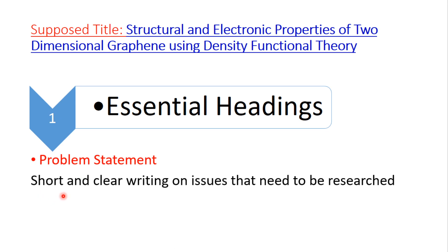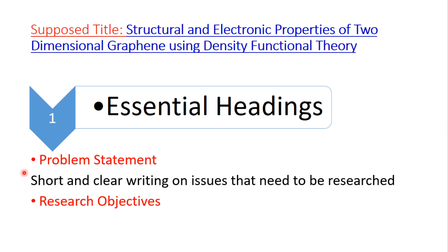The second essential heading is problem statement, which is a short and clear description of the issues that need to be researched — specifically, the problem your work addresses. Other essential headings include research objectives, where you mention the objectives and aims of your research work or proposal.